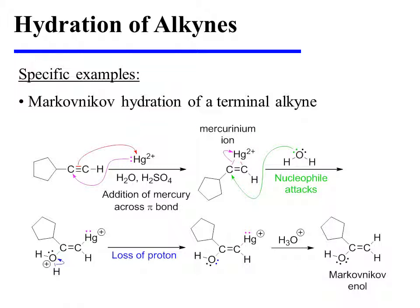The mercurinium ion is attacked by water at the more electrophilic carbon — that is the carbon which is more highly substituted and can therefore bear a greater partial positive charge. As a result of this attack, the mercurinium ion is opened, forming an oxonium ion. The oxonium ion sheds a proton to the medium, and finally the mercury is exchanged for a proton to afford the Markovnikov enol.